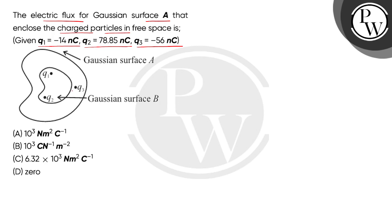We can see in this diagram that Q1 and Q2 are in the middle, the Gaussian surface B is drawn around them, and Q3 is enclosed inside the Gaussian surface A.